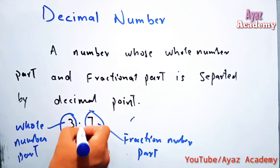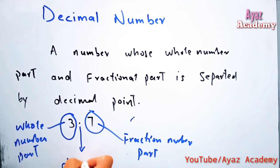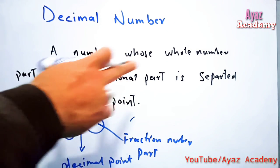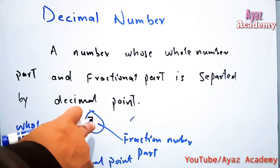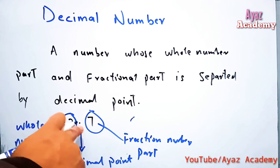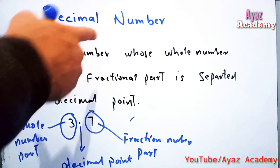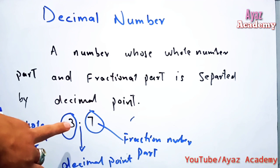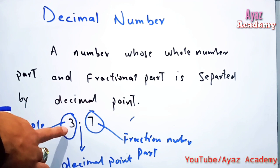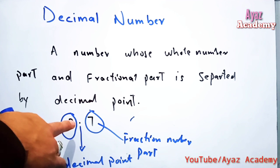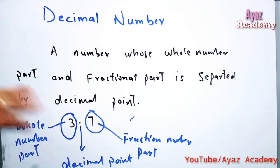The dot is called the decimal point. So, a decimal number has two parts: one is the whole number part and the other is the fractional part, and both are separated by a dot or decimal point. This is a sample definition of a decimal number.